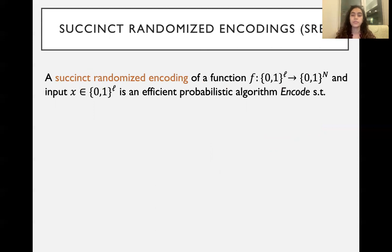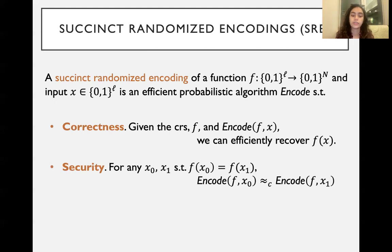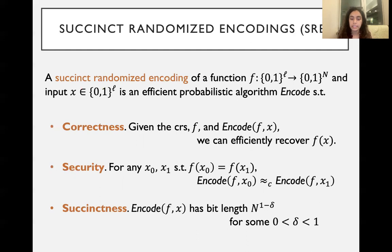How are we going to do this? So we will use succinct randomized encodings. What is a succinct randomized encoding? A succinct randomized encoding of some function, which maps L bits to N bits, is an efficient probabilistic algorithm encode, such that here are the three properties you want. First of all, correctness. Given the CRS, we're working in the CRS model here, the function f and the encoding, we should be able to efficiently recover f of x. Security. So for any two inputs x0 and x1 such that f of x0 is equal to f of x1, we should have that their encodings are computationally indistinguishable. And lastly, succinctness. We need a pretty strong bound on succinctness here. We want that the encoding has bit length n to the 1 minus delta for some delta less than 1.